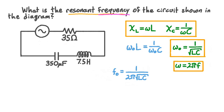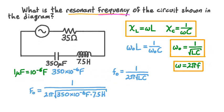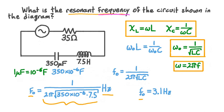Plugging in values: inductance is 7.5 henries. The capacitance is 350 microfarads, which we convert to 350 × 10⁻⁶ farads. Substituting into our formula gives 1 divided by 2π times the square root of 350 × 10⁻⁶ farads times 7.5 henries. The square root of 1 farad times 1 henry is 1 second, so the denominator has units of seconds, and 1/second is hertz. Evaluating numerically gives approximately 3.1 hertz. It's worth noting that the 35-ohm resistor played no role in calculating the resonant frequency.